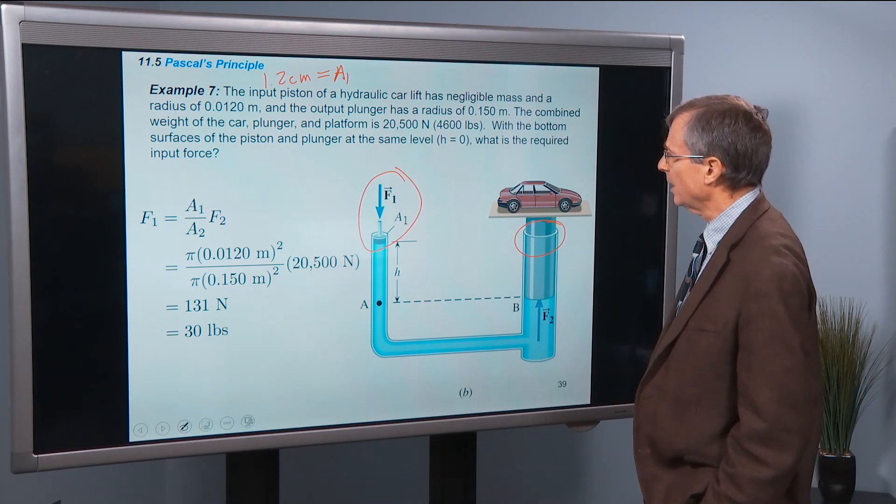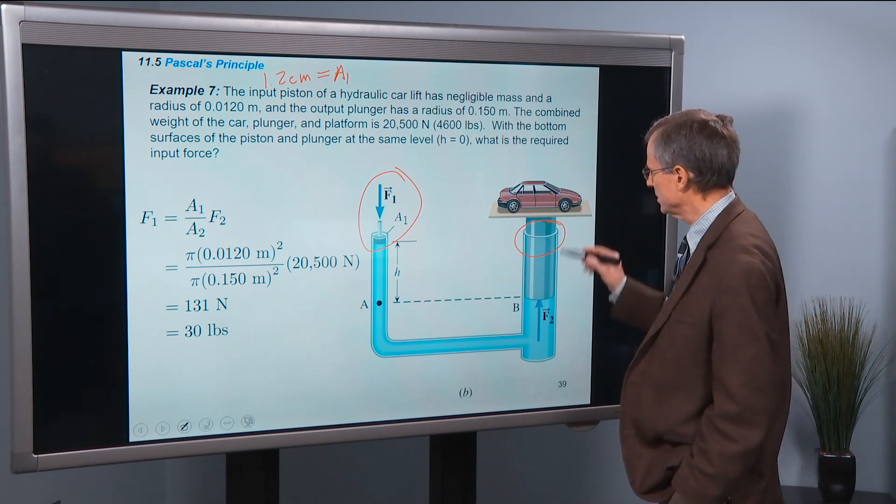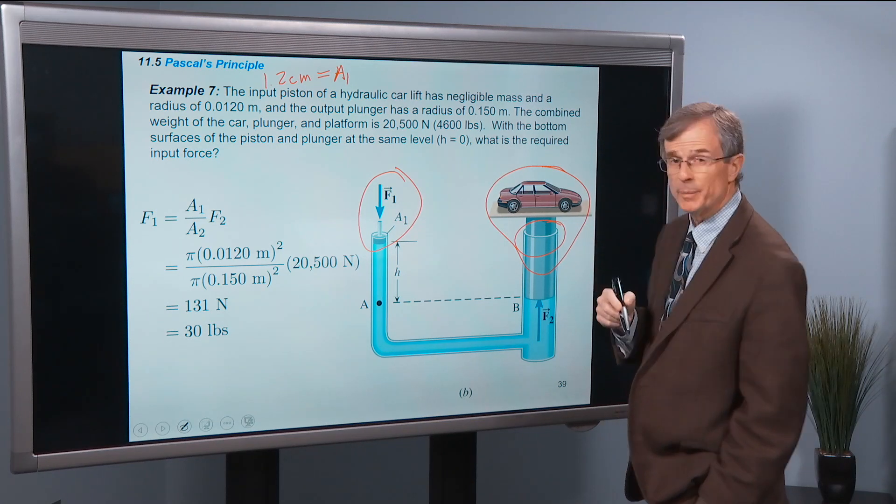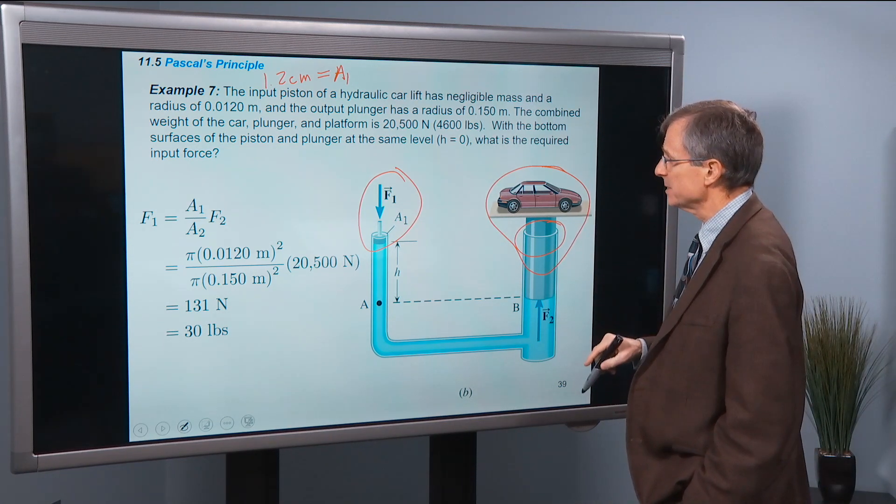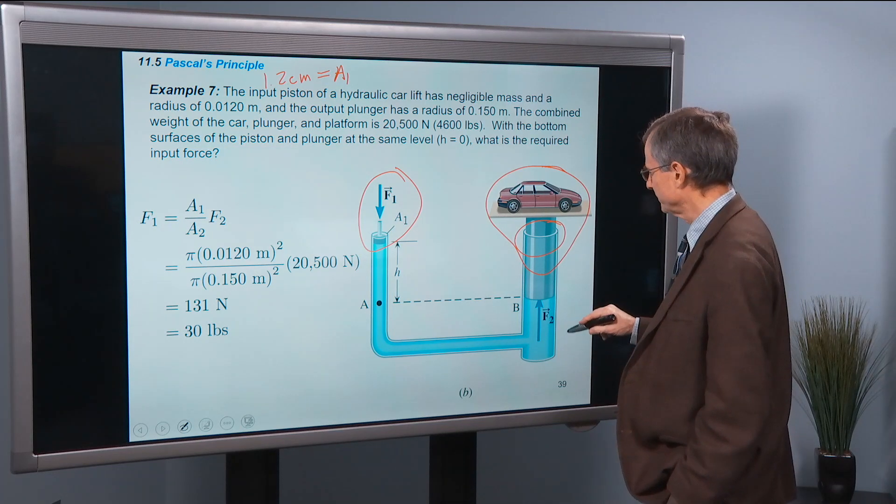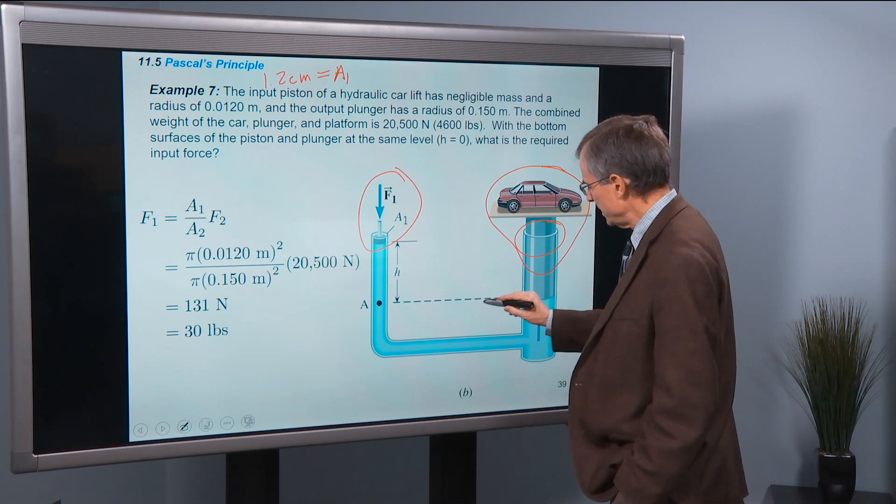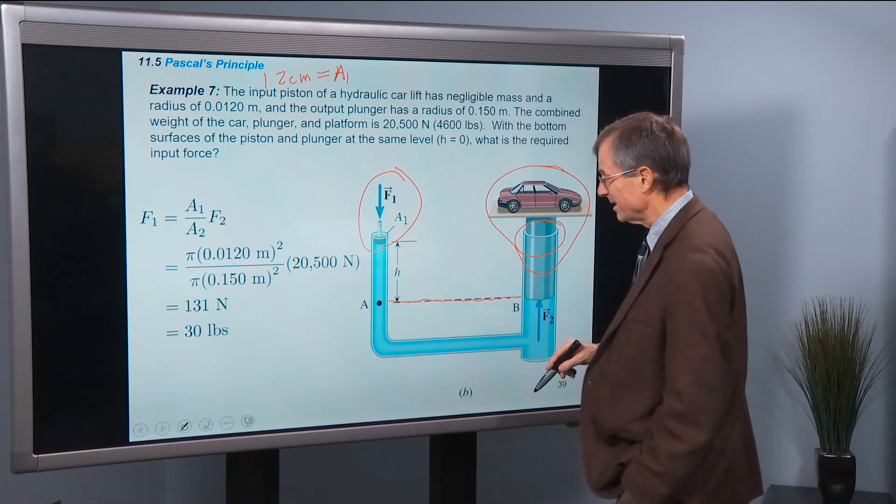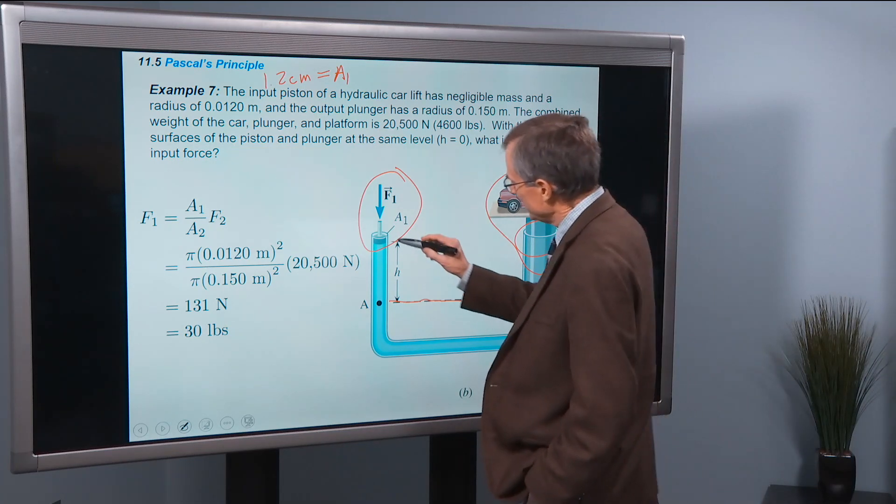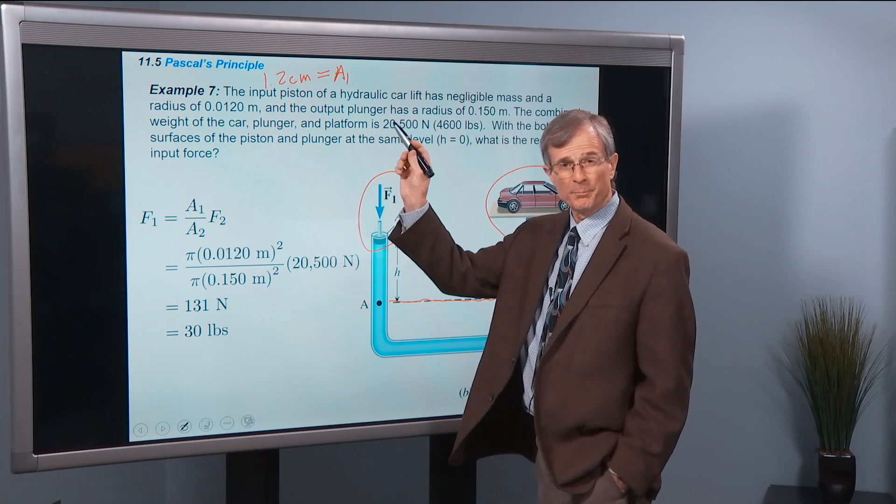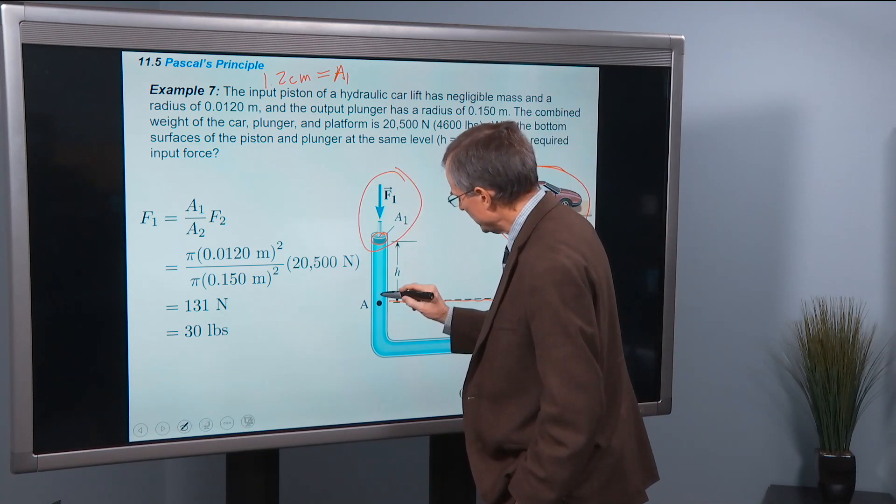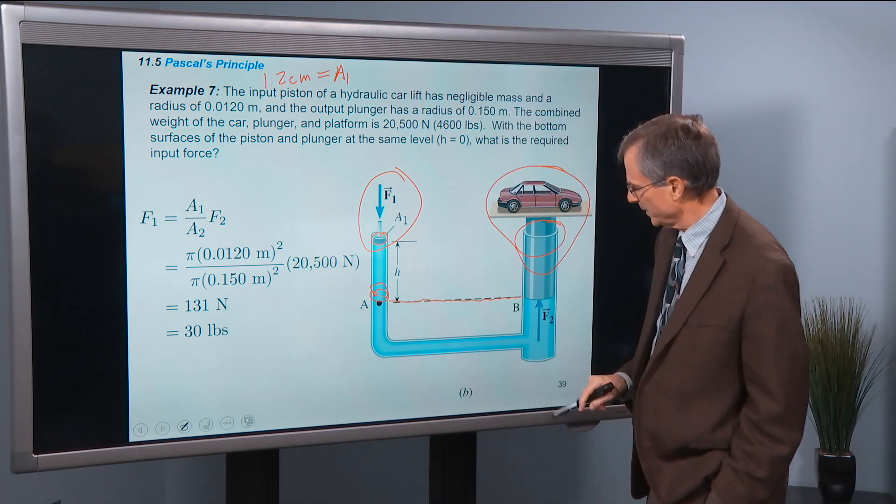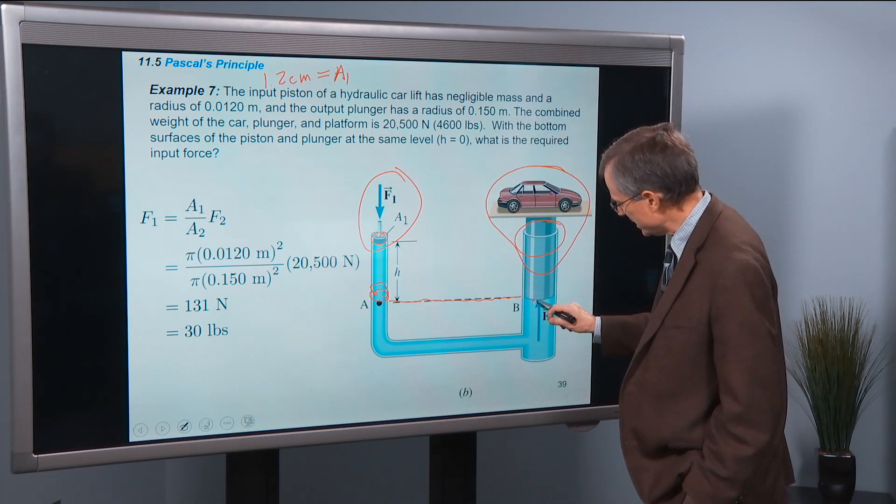The combined weight of the car, plunger, and platform is 20,000 newtons. So that's this whole weight here—4,600 pounds, that's a lot of weight—with the bottom surfaces of the piston and plunger at the same level. So we're talking about these two surfaces being at the same level. So that's not actually shown here. So for this particular problem, this piston would have to be right down here, for the bottoms of those to be at the same place. So that means that the pressure here is the same pressure here.